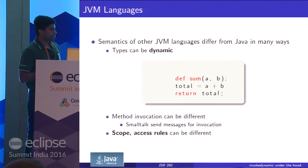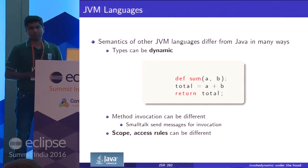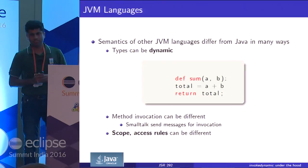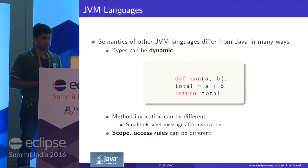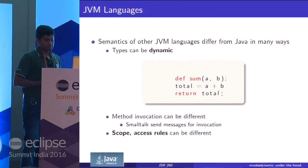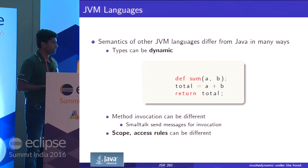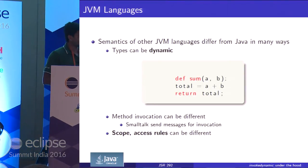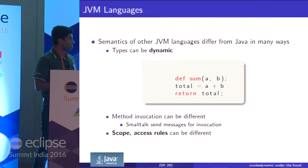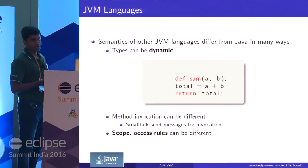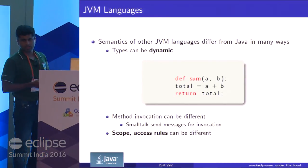The problem with this is that the JVM is designed primarily for Java, and there is a tight coupling between Java and JVM semantics. But the semantics of other JVM languages — take Python for example — are completely different from Java. Python is a dynamically typed language, whereas Java is a statically typed language.